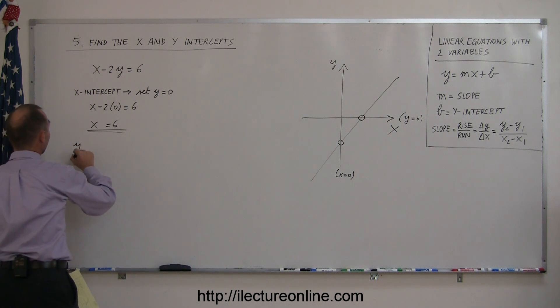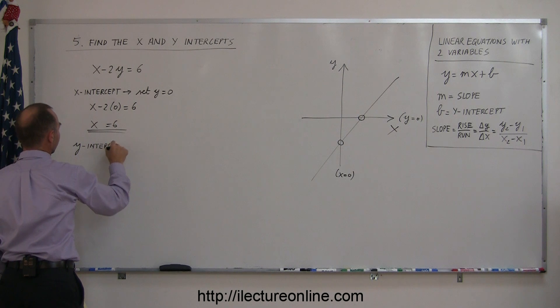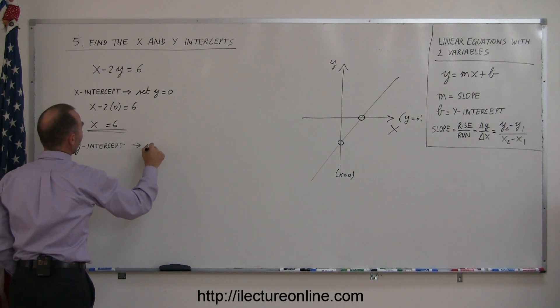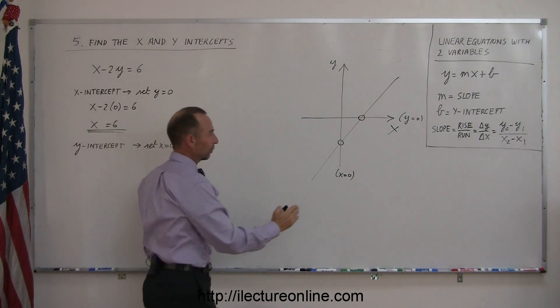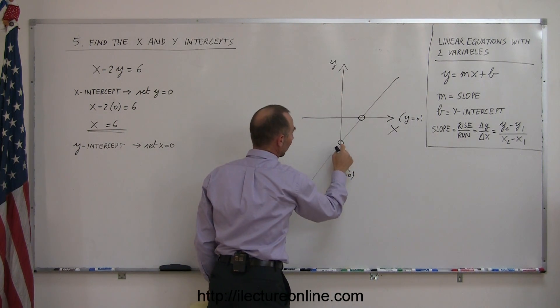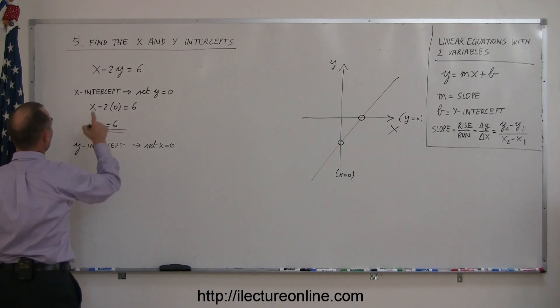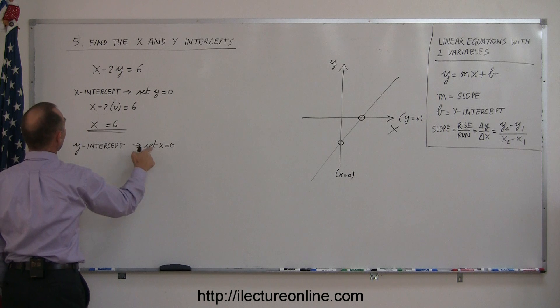To find the y-intercept, I set x equal to zero. So, whenever we cross the y-axis, the x-value of that equation has to equal zero. Here we take our equation. We're going to set x equal to zero.